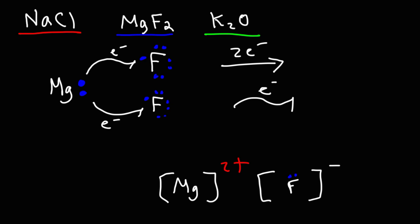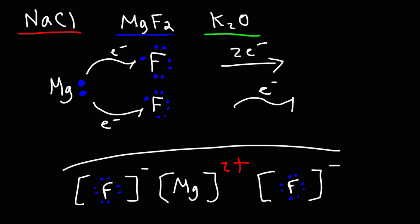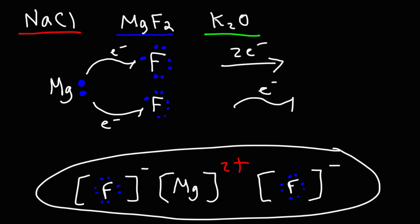We need to write the four lone pairs around each fluoride ion. This is the Lewis structure for the ionic compound magnesium fluoride.